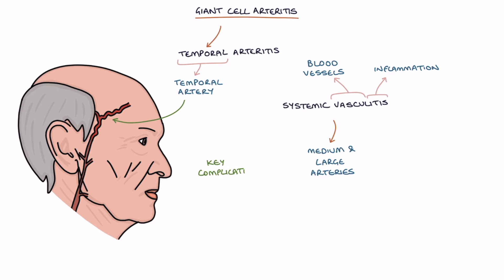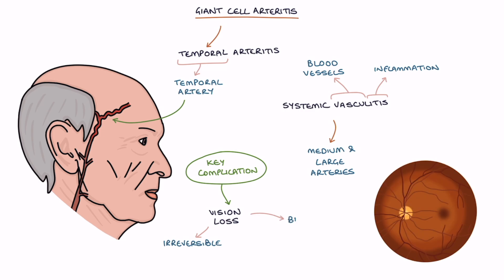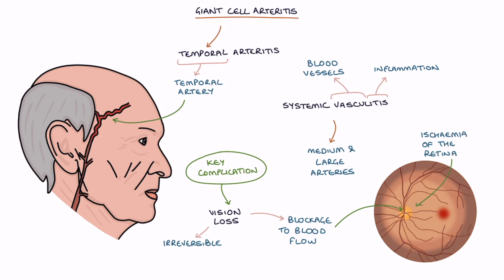The key complication of giant cell arteritis is vision loss, which is often irreversible. It can cause a blockage in the blood flow to the retina at the back of the eye, causing ischemia of the retina and a rapid onset painless loss of vision.